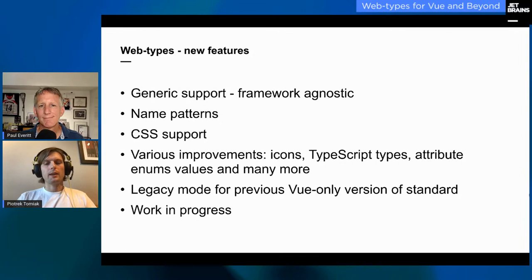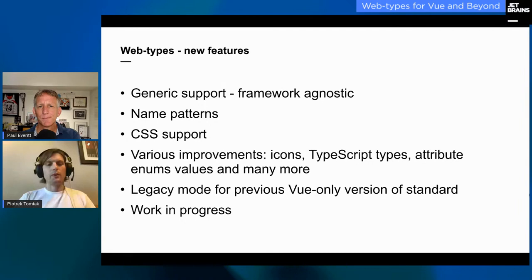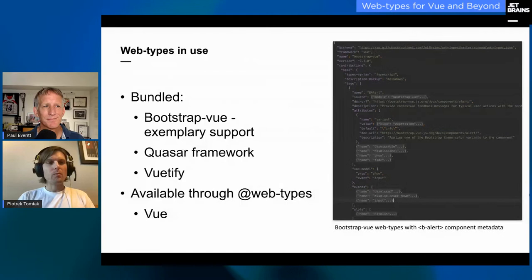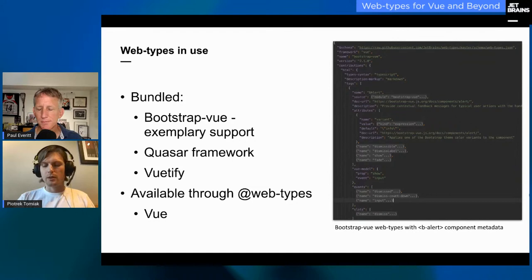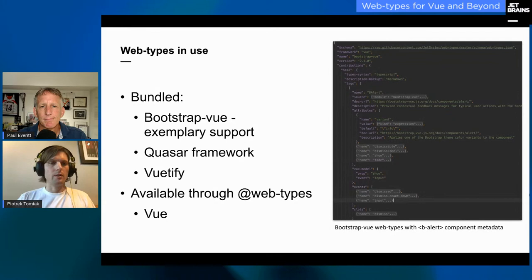All of this is still work in progress. There is a lot of stuff done, but we're still working, and we're counting on your feedback once you try it so that we can early on include your feedback in the support. Right now, Web Types are in use in several Vue libraries, and we're also providing these for the Vue framework itself. This list will grow much longer once the new version reaches stable.